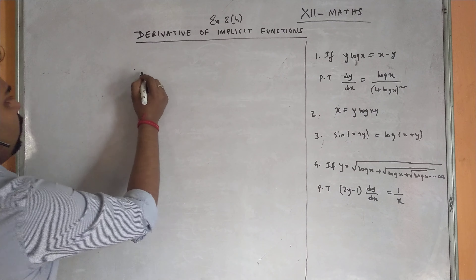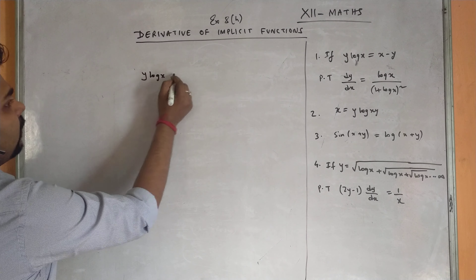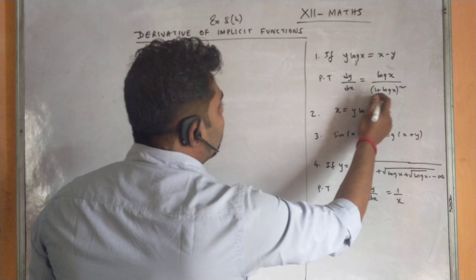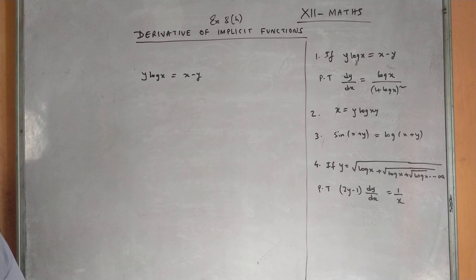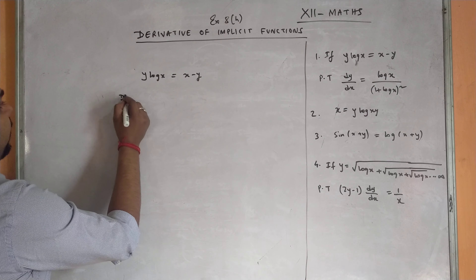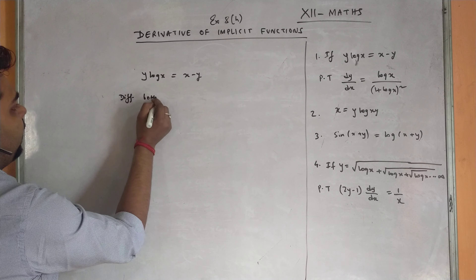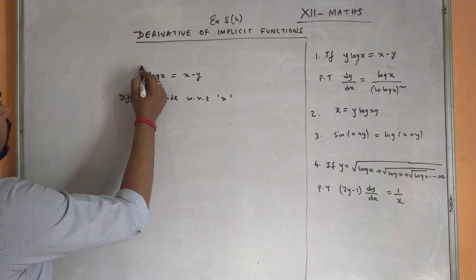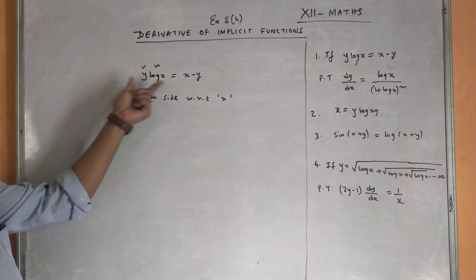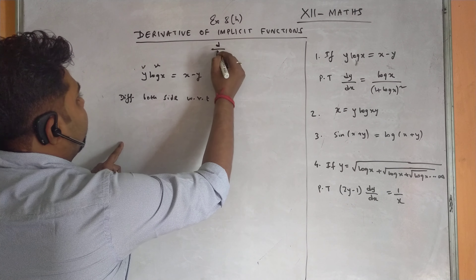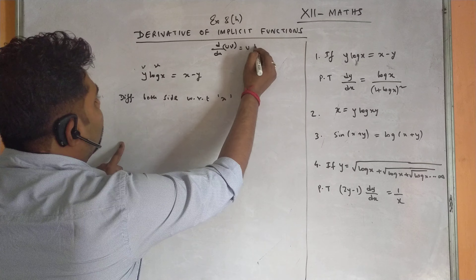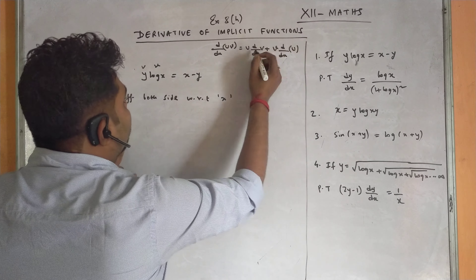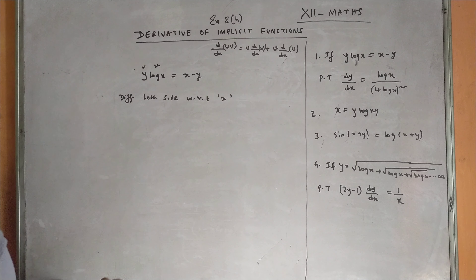Next question: y·log(x) = x - y; prove that dy/dx = log x divided by (1 + log x)². We differentiate both sides with respect to x, applying the UV rule: d/dx(y·log x) = d/dx(x - y). The UV formula is u·d/dx(v) + v·d/dx(u).